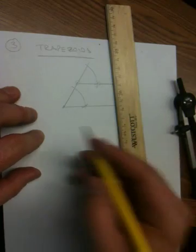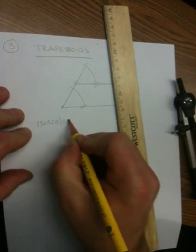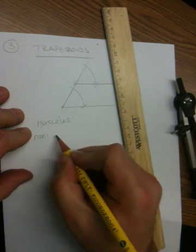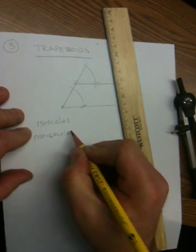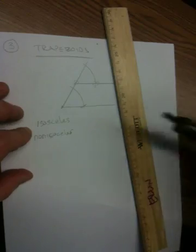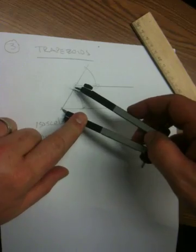The question is whether I want to produce an isosceles trapezoid or a non-isosceles trapezoid. If I want to choose isosceles, I expect to find this length reproduced over here. So let's find that one first.